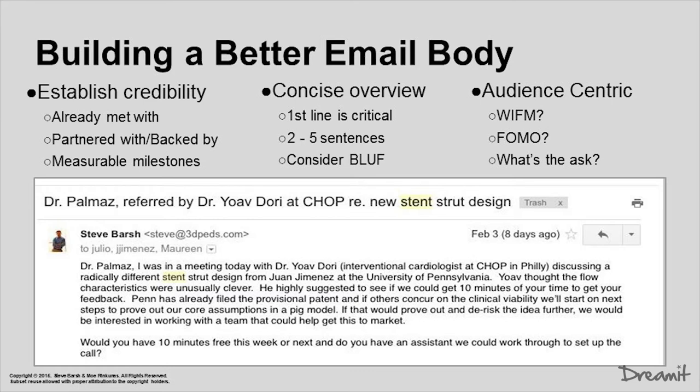Next, think about putting in a really concise overview — almost like your elevator pitch inside an email, but really, really concise. Those first one, two, or three sentences are really important. You can also consider something called BLUF — Bottom Line Up Front. A lot of times people send really long emails and at the very bottom is what the actual action item is. Sometimes put that bottom line right up front at the very top of the email, establish credibility, get to the point, and then put the supporting material after it.